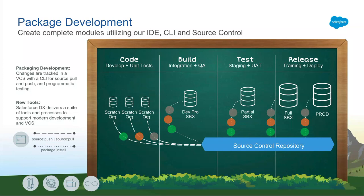As you build these packages and are ready to test them out, you will start creating beta package versions and deploying them in your developer pro sandboxes, where the rest of your production org metadata lives. This is where you can start doing integration testing, introduce sample data sets, and understand how your package works. As you move on to staging and testing with more real-world data sets, you can start looking at partial sandboxes. This is where we do the data management for you — we bring over up to five gigabytes of data from your production org.